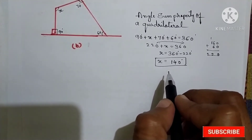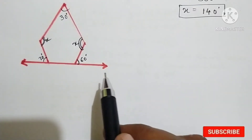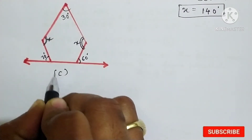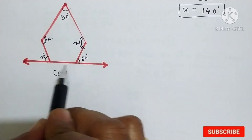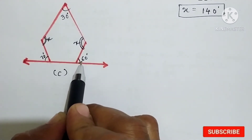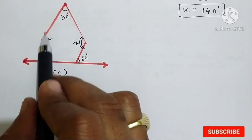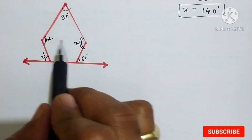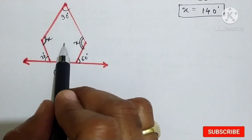Now we will go to the next diagram — this is the C diagram. In this diagram, there is a horizontal line with exterior angle 60 degrees on one side and exterior angle 70 degrees on the other side. Here one interior angle is given as 30 degrees, and here x and here also x. So we should find the x value.